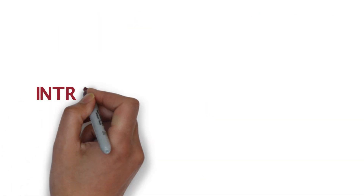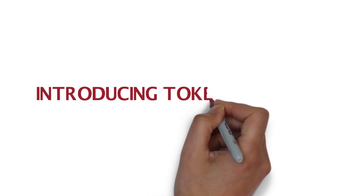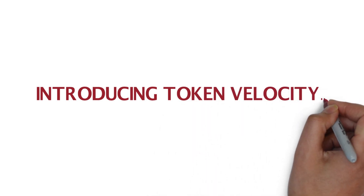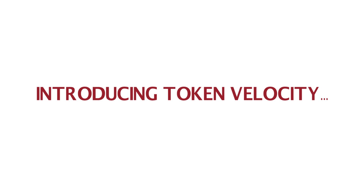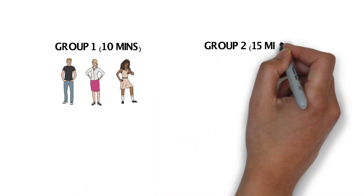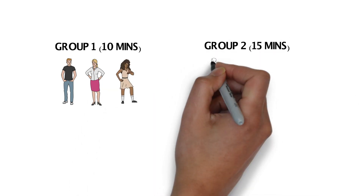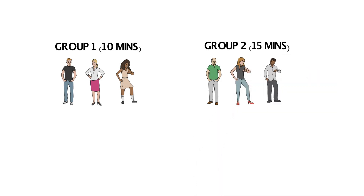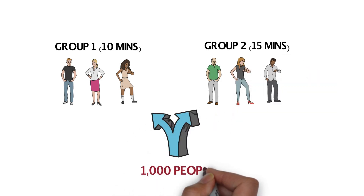This is where we introduce the issue of token velocity. Many people believe that the price of tokens is simply determined by supply and demand. In a way this is true, but it isn't entirely correct if token velocity isn't accounted for. Let's add a further 500 people to bring our total up to 1,000 people requiring lifts. If we double the number, we'll surely be doubling the demand for tokens, right? Let's draw it out and see what happens. We're using Carfair again, but now there are 1,000 people using the application.